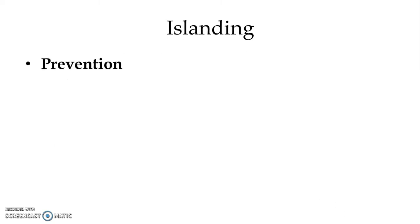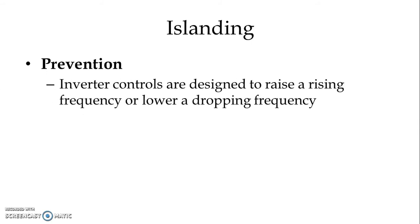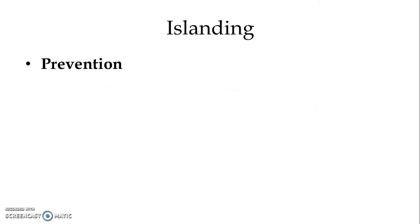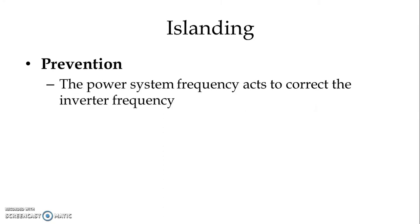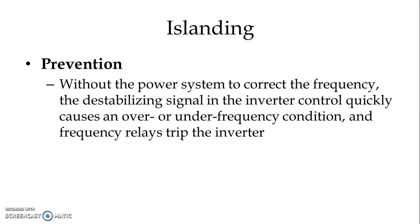Prevention: Inverter controls are designed to raise a rising frequency or lower a dropping frequency. The power system frequency acts to correct the inverter frequency. Without the power system to correct the frequency, the destabilizing signal in the inverter control quickly causes an over or under frequency condition, and frequency relays trip the inverter.